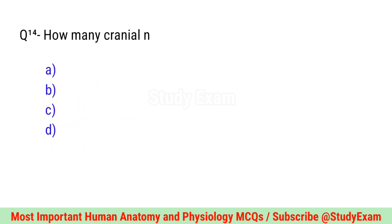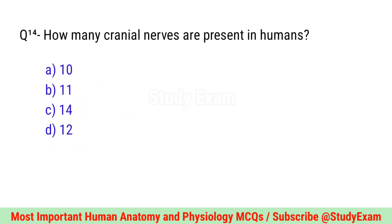Question number fourteen. How many cranial nerves are present in humans? Correct option is D. 12.